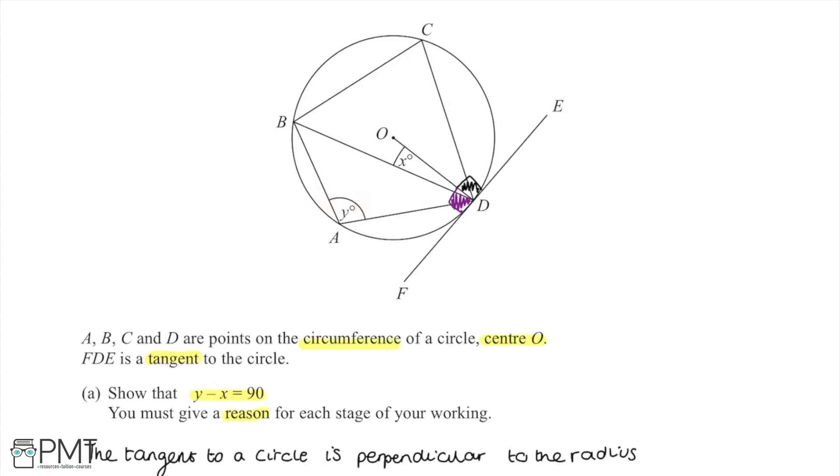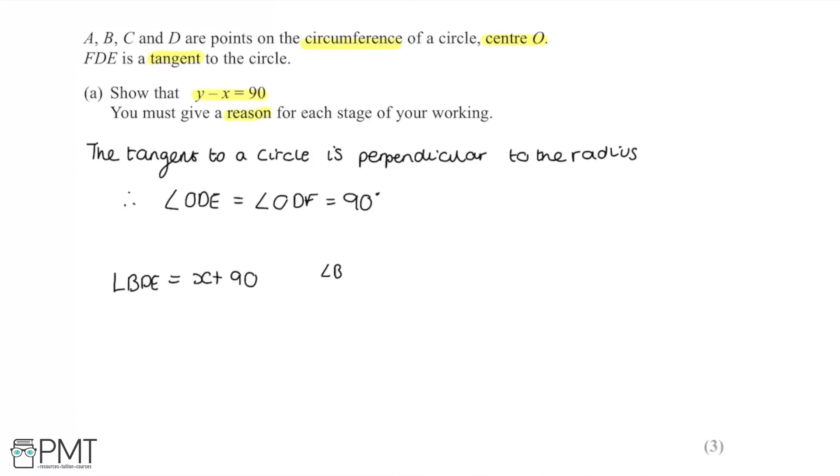So now I can also say that angle BDE is equal to y, and that's due to the alternate segment theorem. Now we've stated our reasoning here, and if BDE is equal to y and BDE is also equal to x plus 90, then x plus 90 is equal to y, and we can just rearrange that to give us y minus x is equal to 90 when we subtract x from both sides. And that is as required because that's what the question asked us to get the answer in the form of.